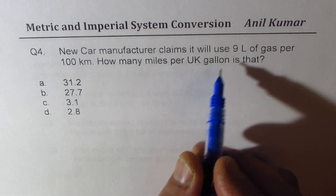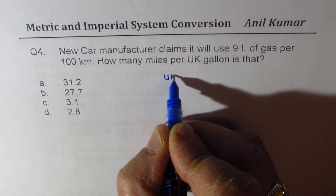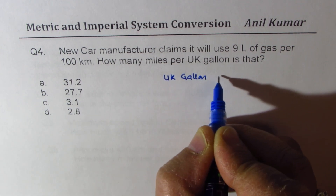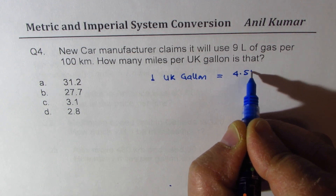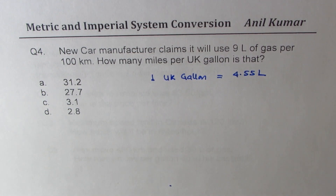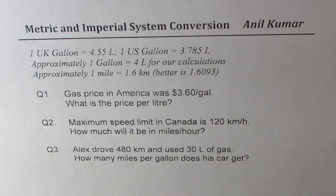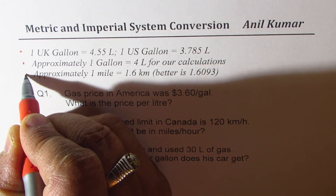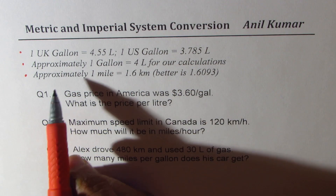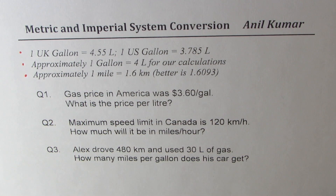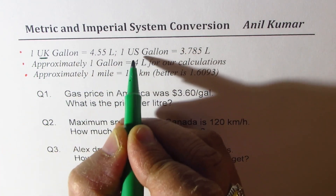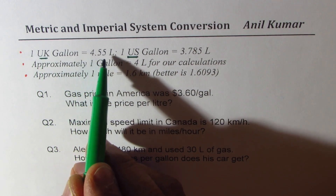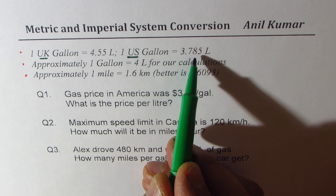Let's understand the liters to UK gallon conversion. One UK gallon is basically equal to 4.55 liters — that is the conversion factor. These are the conversion units you should know. In some tests they are given to you and sometimes they are not. When converting from gallons to liters, we could have a UK gallon or a US gallon. One UK gallon is 4.55 liters and one US gallon is 3.785 liters.